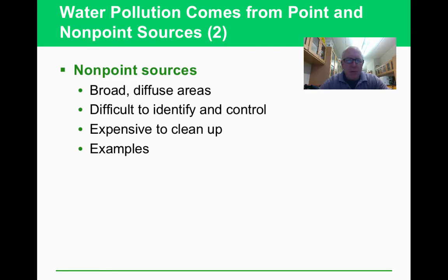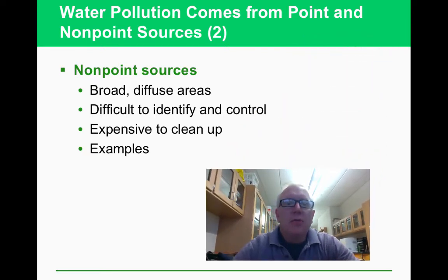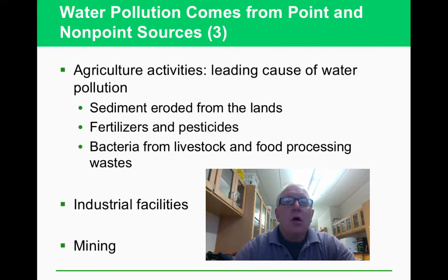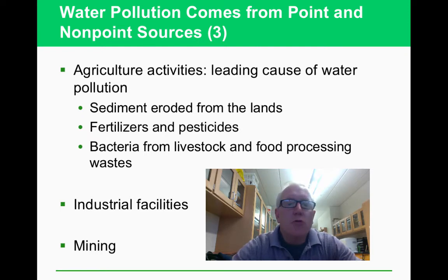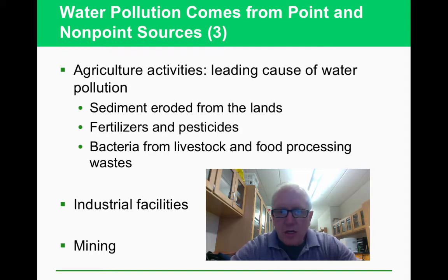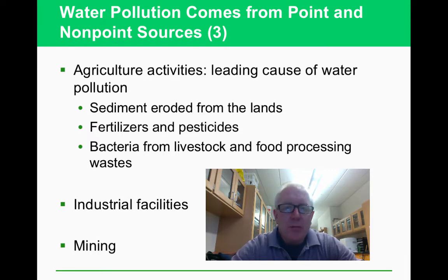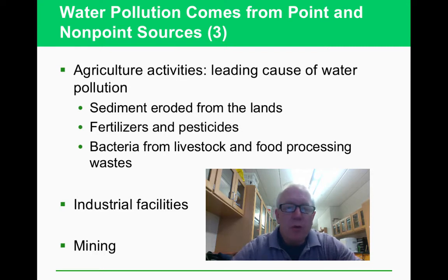Non-point sources are harder to regulate and harder to trace. Runoff from agricultural fields — carrying nitrates, phosphates, and livestock waste — is a good example. Mining is another: we've talked about cyanide leaching for gold mining, and lead and mercury from mining, with similar pollutants also coming from industrial facilities.